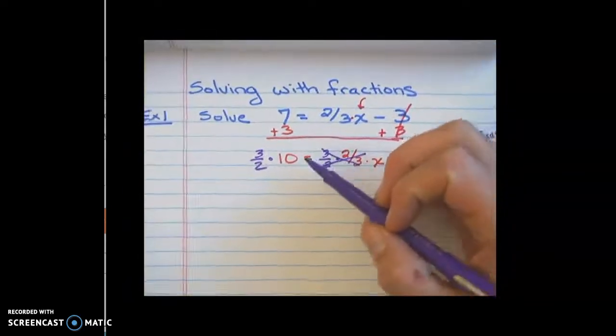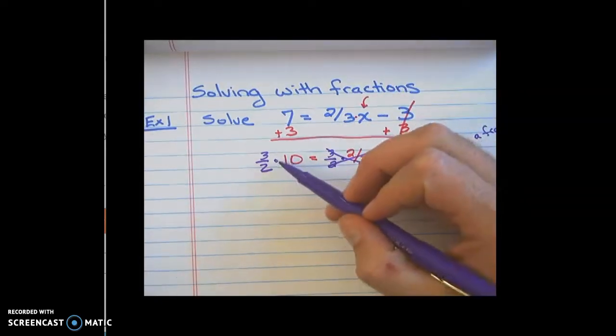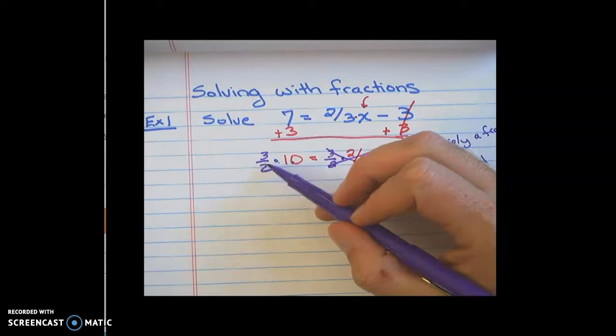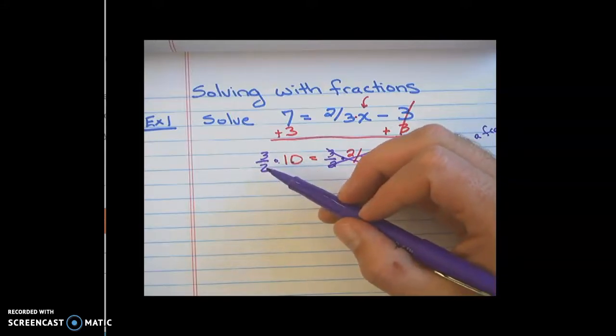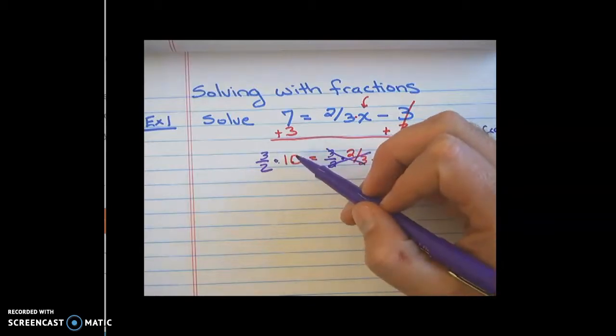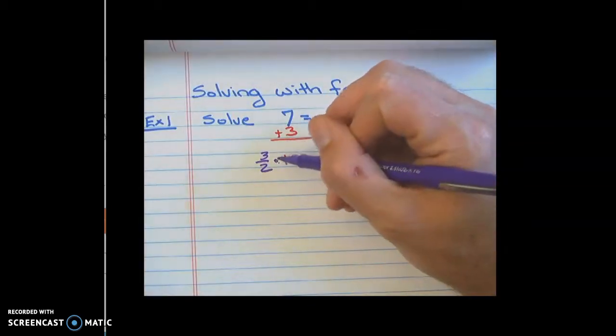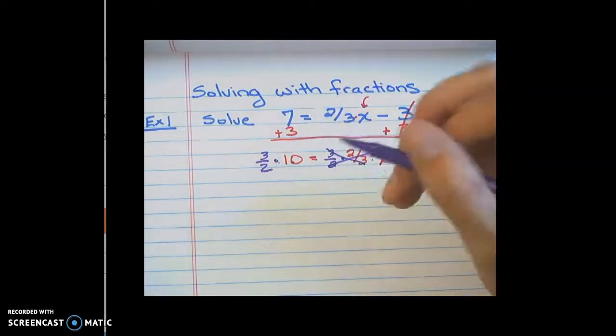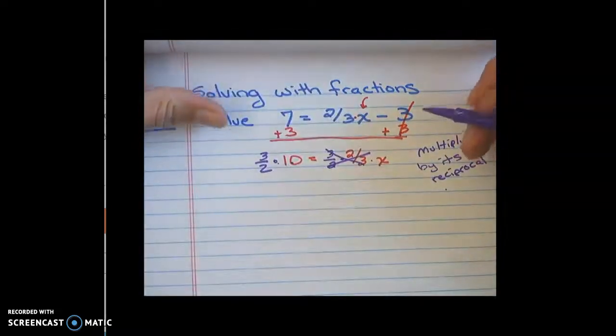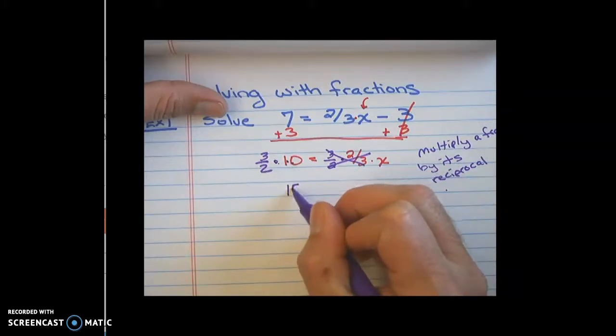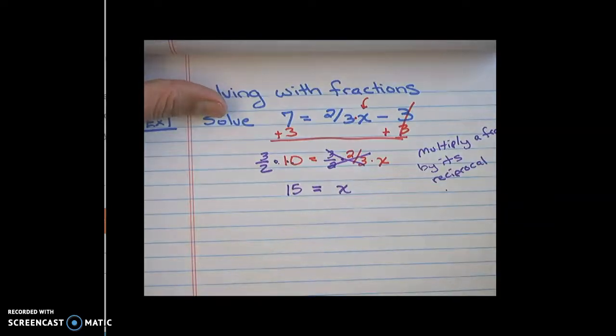But I also would like you guys just to get used to doing this mentally. 3/2 times 10. There's a couple different ways you can do it. But it's 3 times 10, which is 30, and then divided by 2. So 30 divided by 2 is 15. I could also, if you don't like to do large multiplications, you can do the division first. So 10 divided by 2 is 5, then times by the 3 is 15. So there's lots of ways you can multiply it. But I would just do it by reading it. 3 times 10 is 30, divided by 2 is 15.